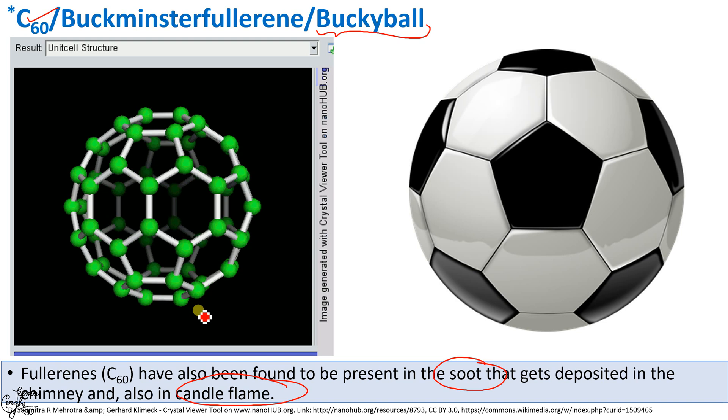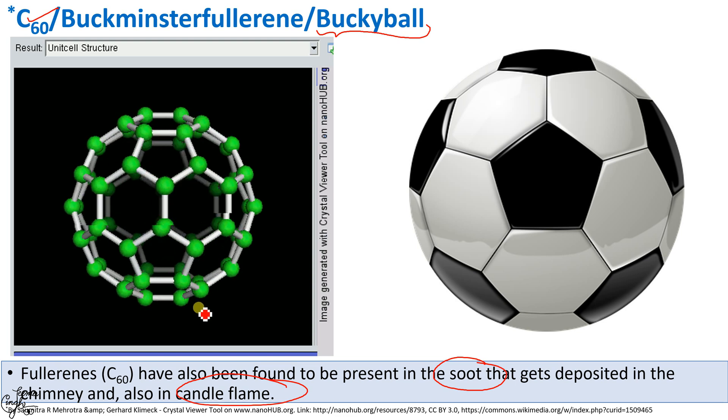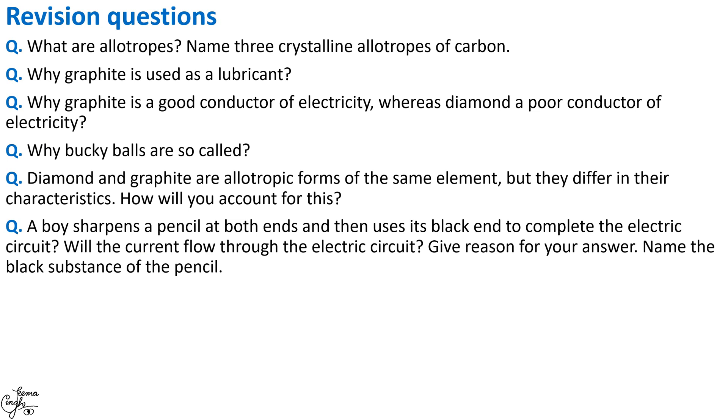From whatever we have learned in this video, the things that you need to remember and be able to write for your boards are direct questions such as: What are allotropes? Name three crystalline allotropes of carbon. Why is graphite used as a lubricant? Why is graphite a good conductor of electricity, whereas diamond is a poor conductor? Why are buckyballs so called? I am sure after going through this video, you are in a position to answer these questions.